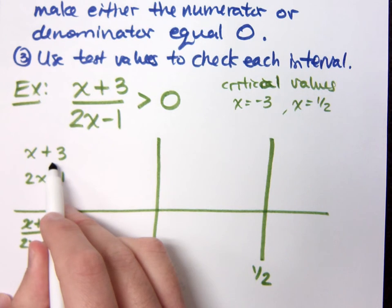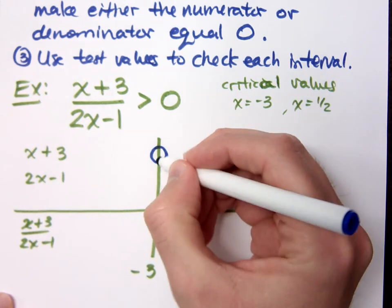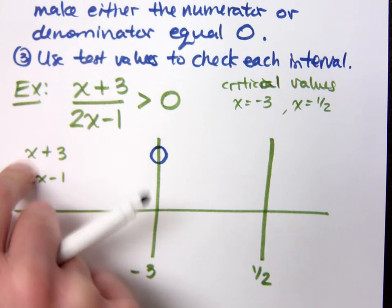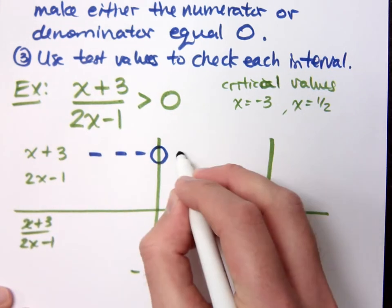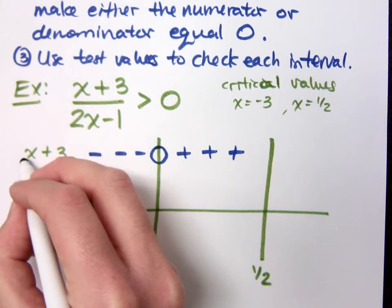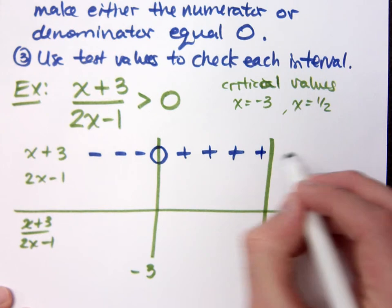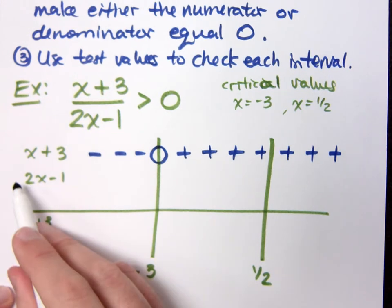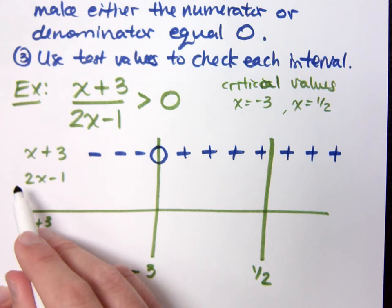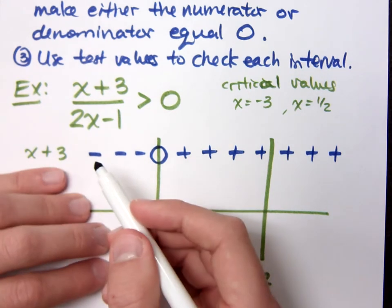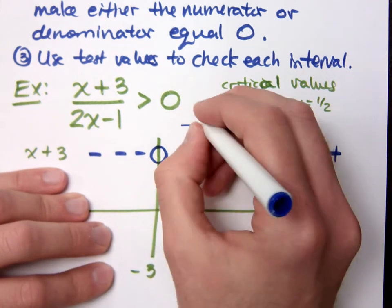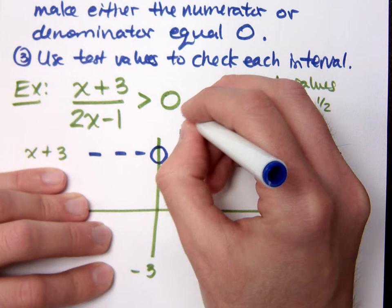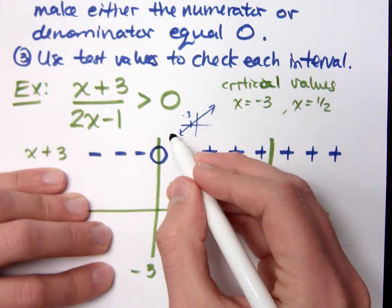For x plus 3, its critical value is negative 3 — that's where it equals zero. Since the coefficient of x is positive, you're negative to the left of negative 3 and positive to the right. Think about it: if you graphed x plus 3, it's linear with a positive slope, so greater than negative 3 gives positive values and less than negative 3 gives negative values.